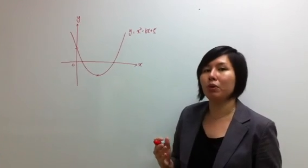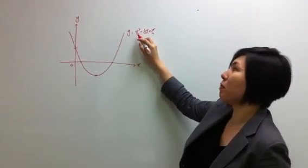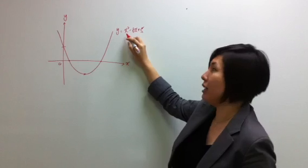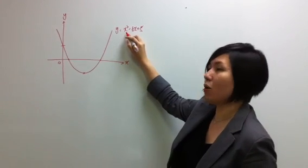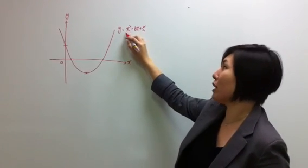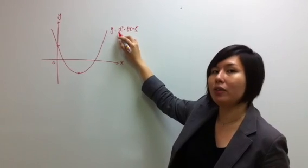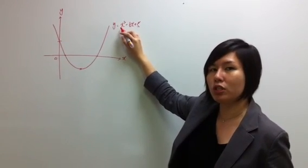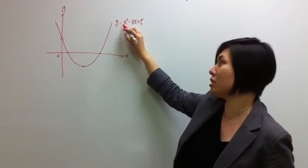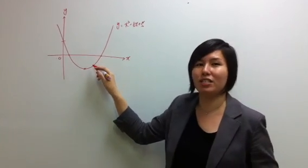When does it happen that the graph will be a happy face? You look at the highest power in the equation, which in this case is our x-squared term. The coefficient of x-squared is a positive 1 — the coefficient is the constant term in front of x-squared. Since it's positive, we have a happy face graph.